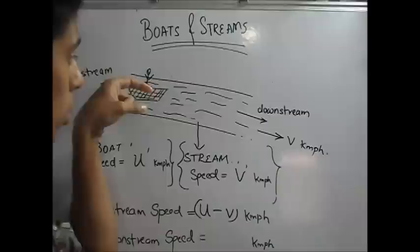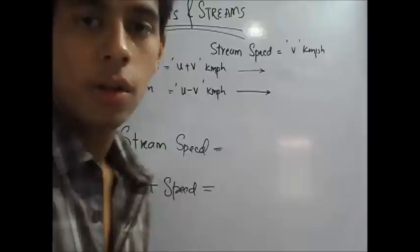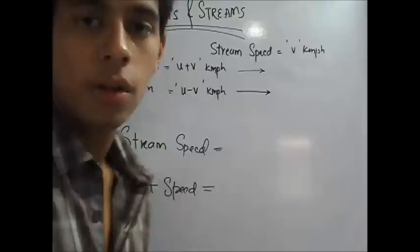But when you take a downstream speed, you are riding in the flow of the water. So this gives an additional boost. It's like riding a cycle down a hill. It gives an additional boost. You have got your own speed of u plus an additional speed of v. So your downstream speed will be u plus v kilometers per hour.